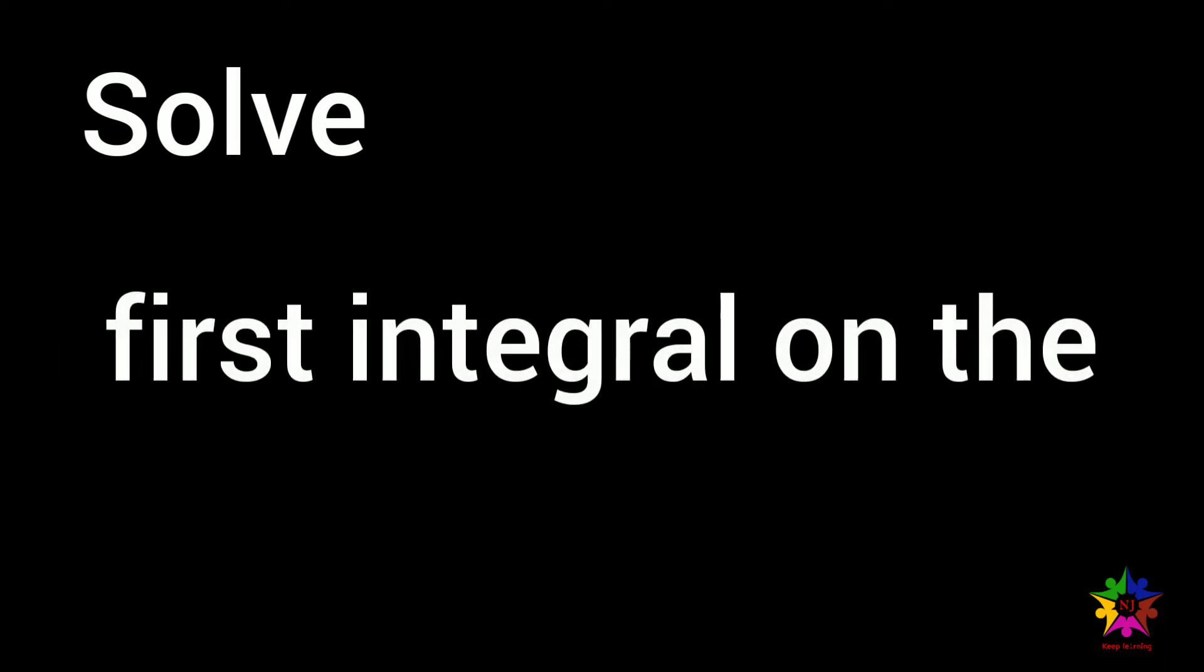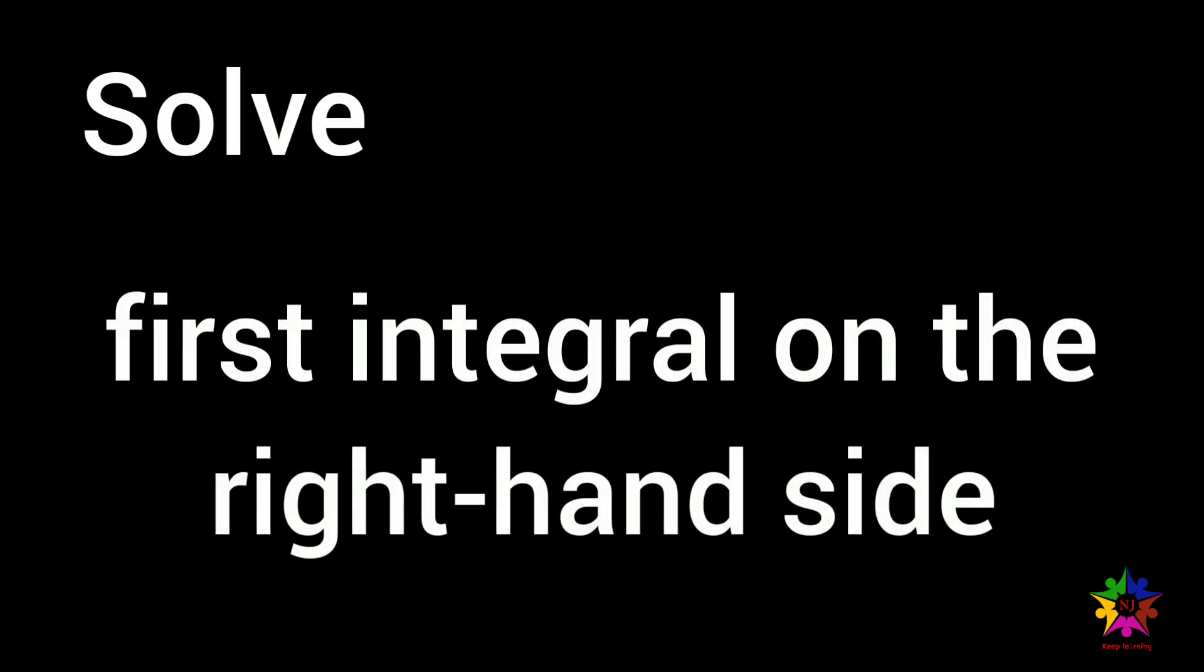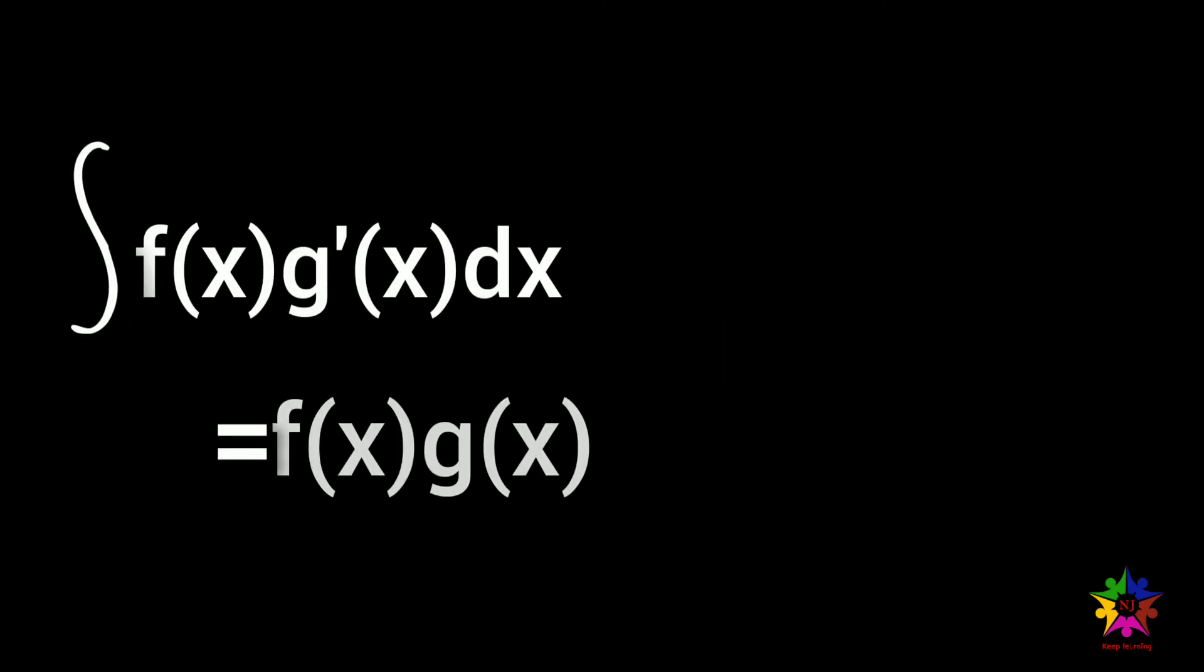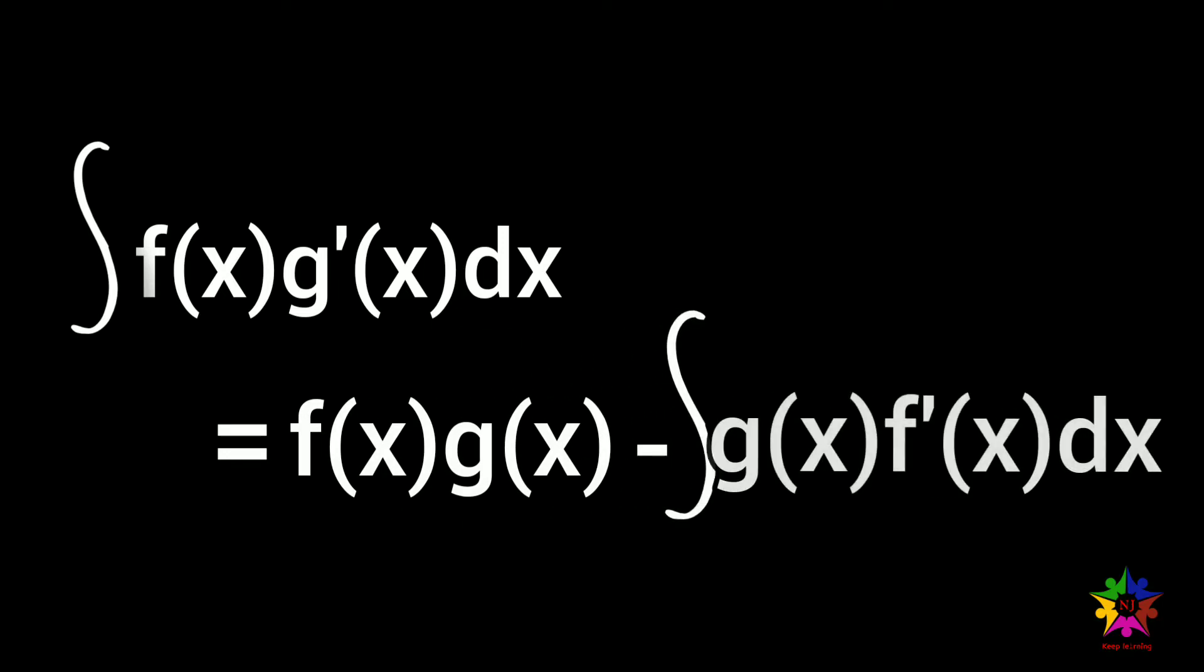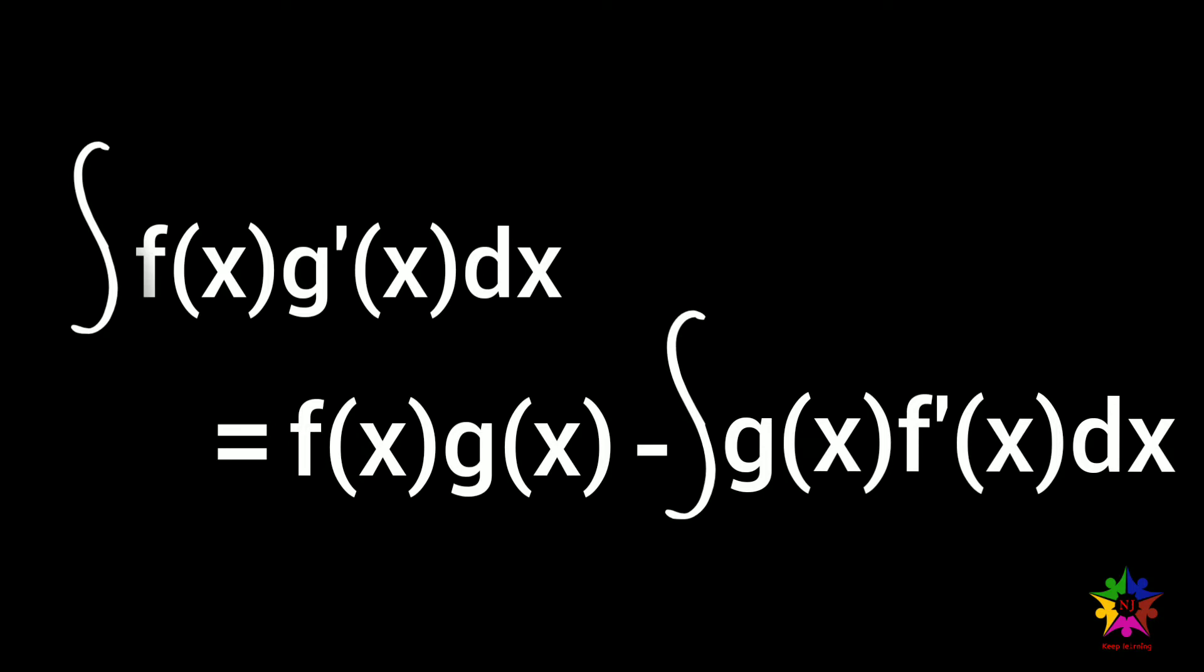Then solving algebraically for the first integral on the right hand side, integral f of x g dash of x dx is equal to f of x g of x minus integral g of x f dash of x dx.